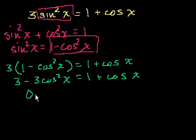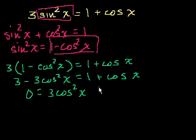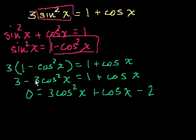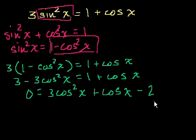Let's put everything onto the right side of the equation. 0 is equal to 3 cosine squared x plus cosine x, and then 1 minus 3 is minus 2. We had negative 3 here; we added 3 cosine squared x to both sides and subtracted 3 from both sides, giving minus 2. Now, what can we do? This looks an awful lot like a quadratic equation, except instead of ax squared plus bx plus c, we have cosine squared x — a whole cosine of x, squared.